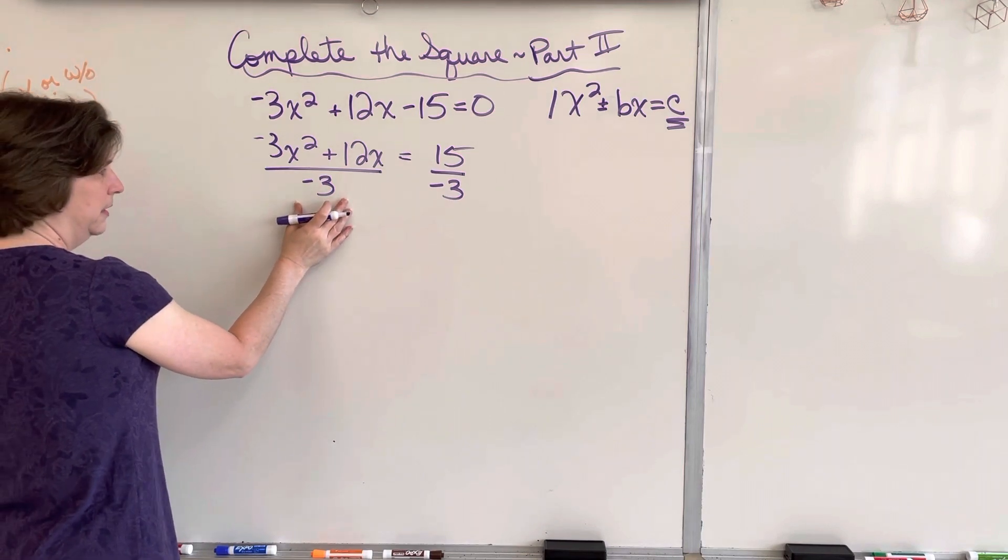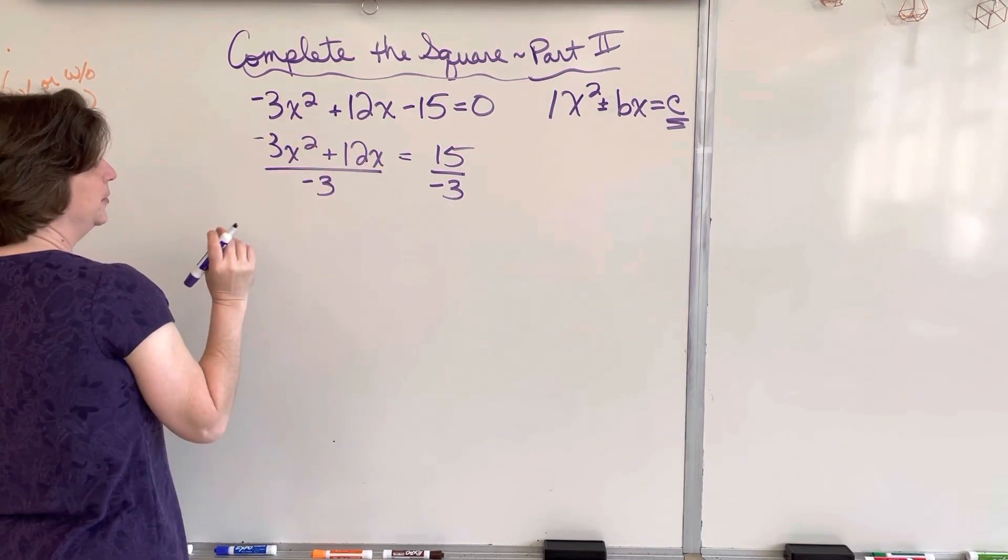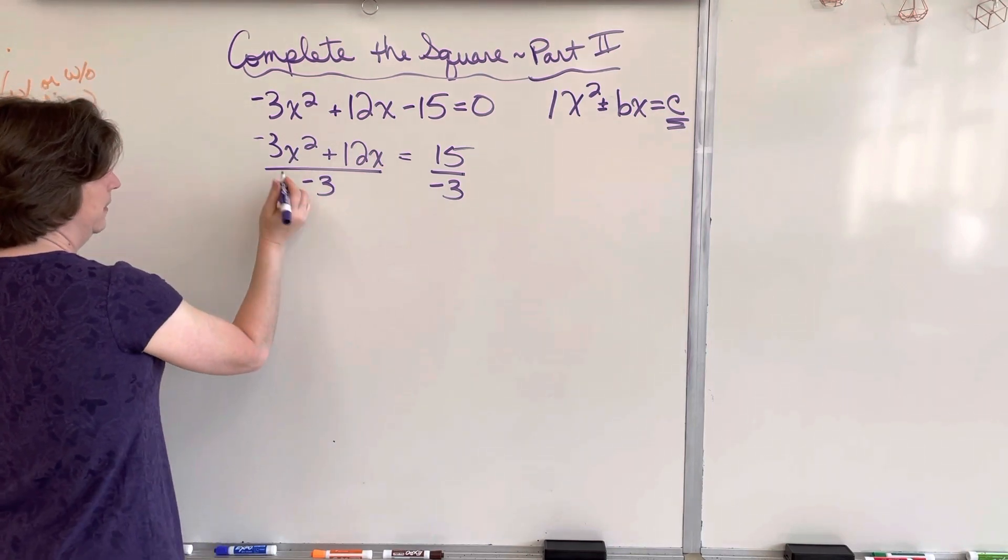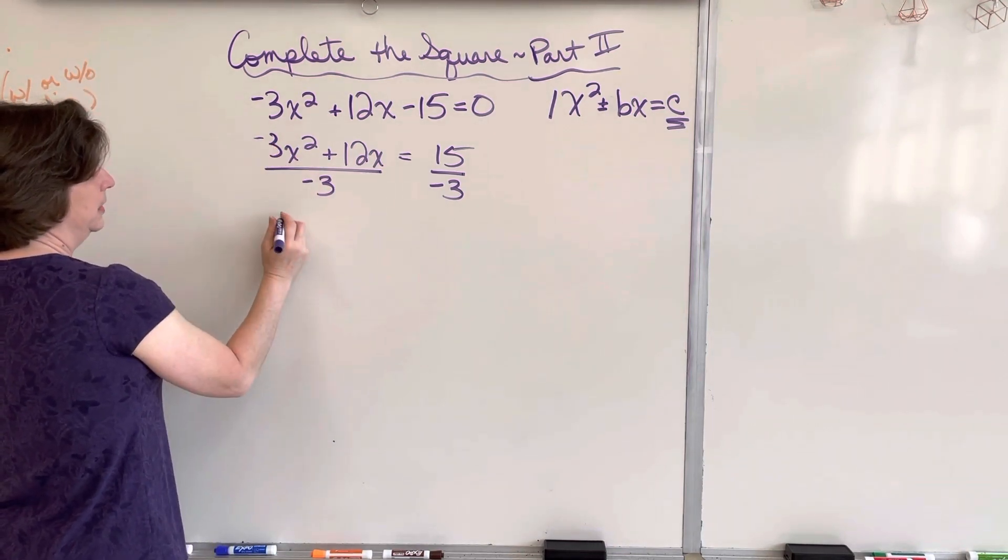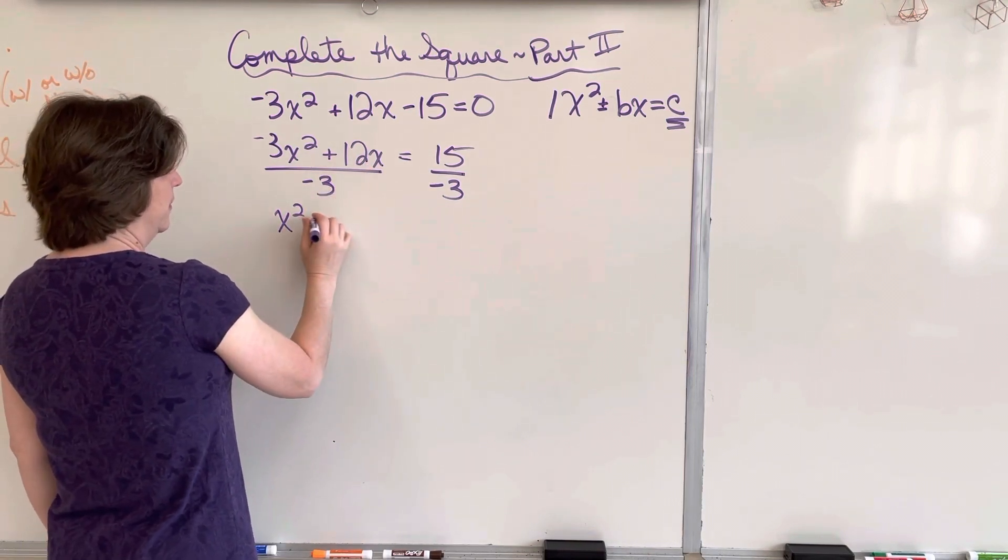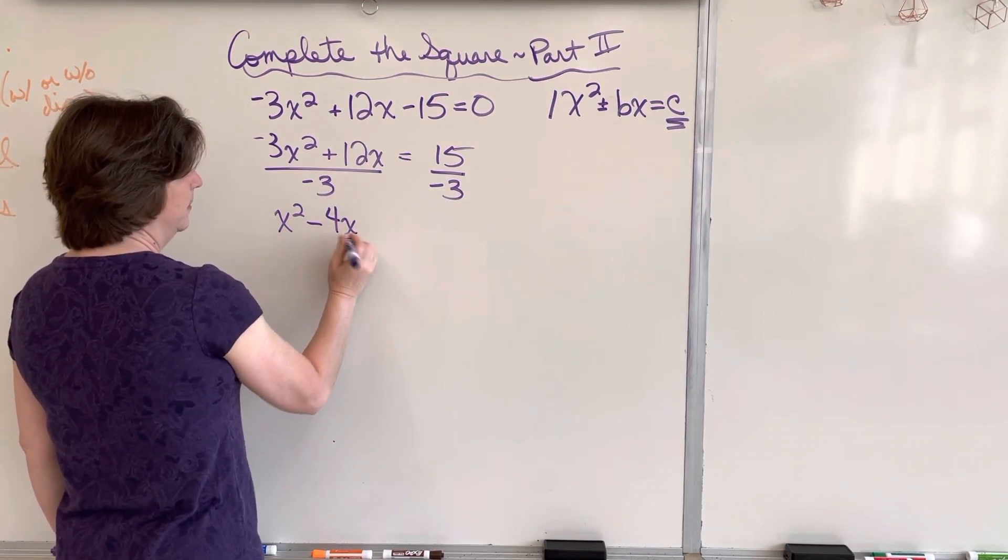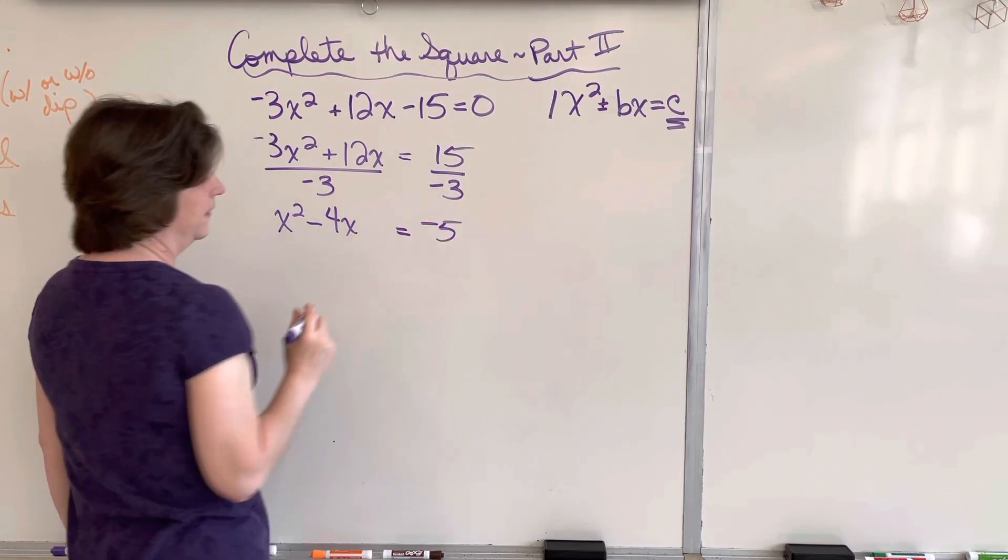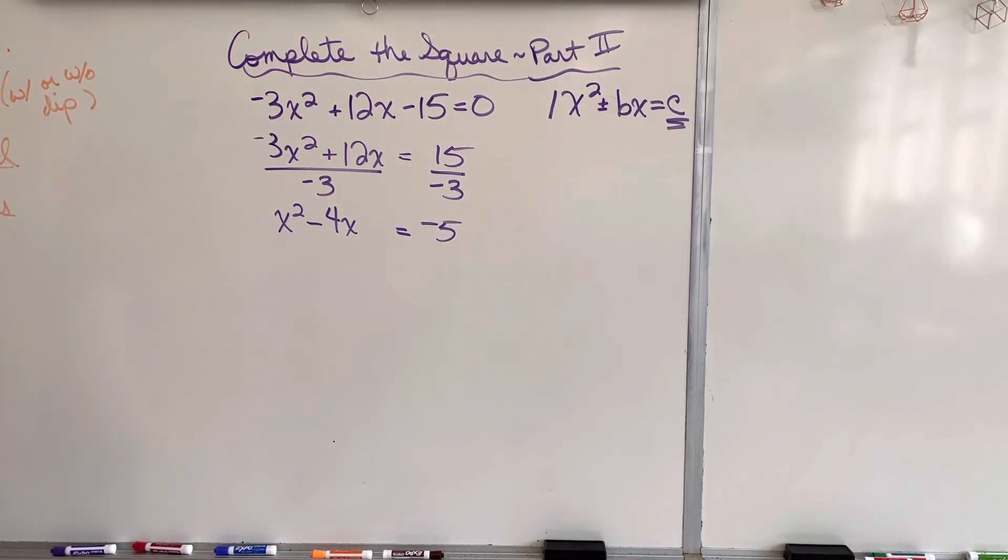When you've got this divide, but you've got add or subtract on the top, that means you have to distribute that divide by negative 3. Negative 3 goes into negative 3, leaving me with x squared. Negative 3 goes into 12x minus 4x equals, this is negative 5. That was step 1.